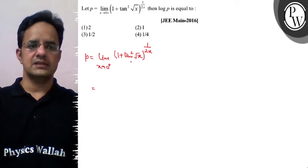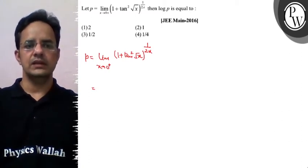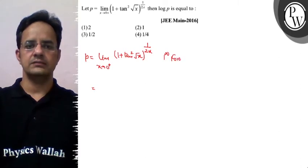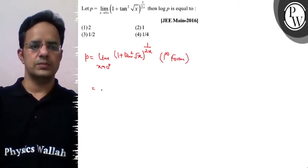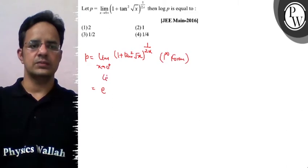So here agar x tending to 0 hai then this base is 1, par is infinite means it is of the form 1 raised to power infinite aur 1 raised to power infinite ki liya hum likhenge e raised to power limit x tending to 0 plus